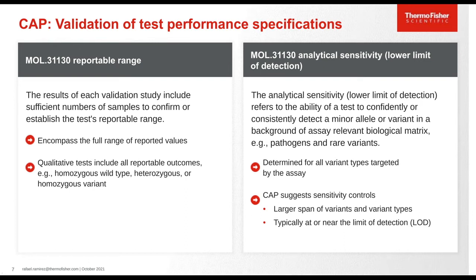Each validation study must include sufficient numbers of samples to confirm or establish the test reportable range, encompassing the full range of reported values. For pharmacogenetic studies, you need to cover all potential reportable outcomes such as homozygous wild type, heterozygous, or homozygous variant for all assays on your panel. Analytical sensitivity or lower limit of detection refers to the ability of a test to confidently detect variants in a background of assay-relevant biological matrix. You need to spike your control material into your intended sample types such as urine or swab media to take through your extraction, and include multiple biological and technical replicates throughout the qPCR process.